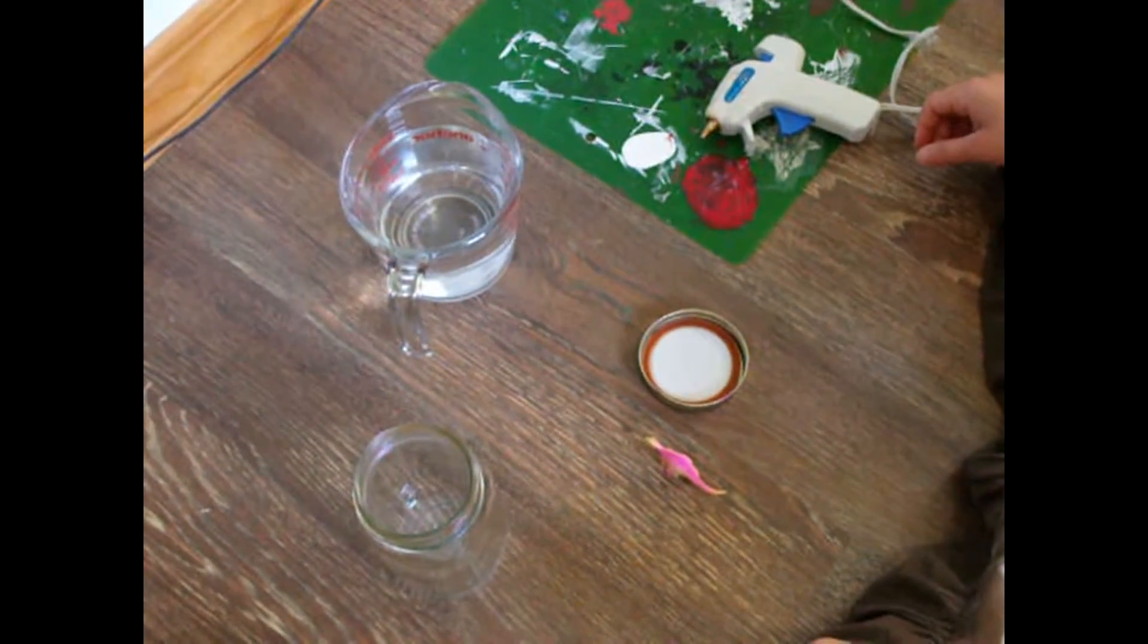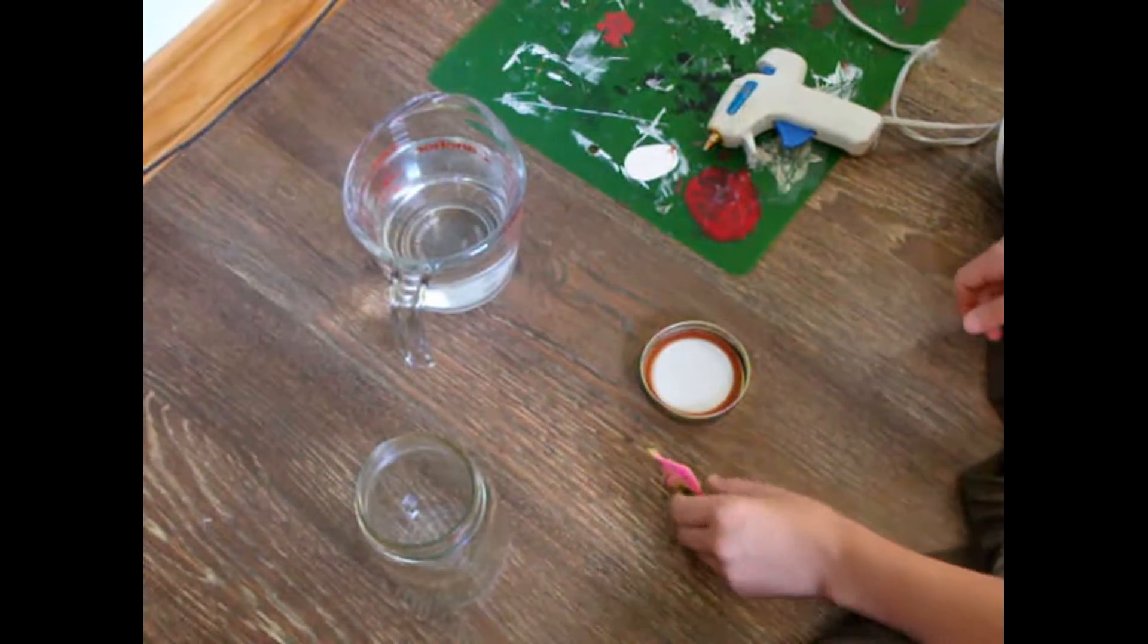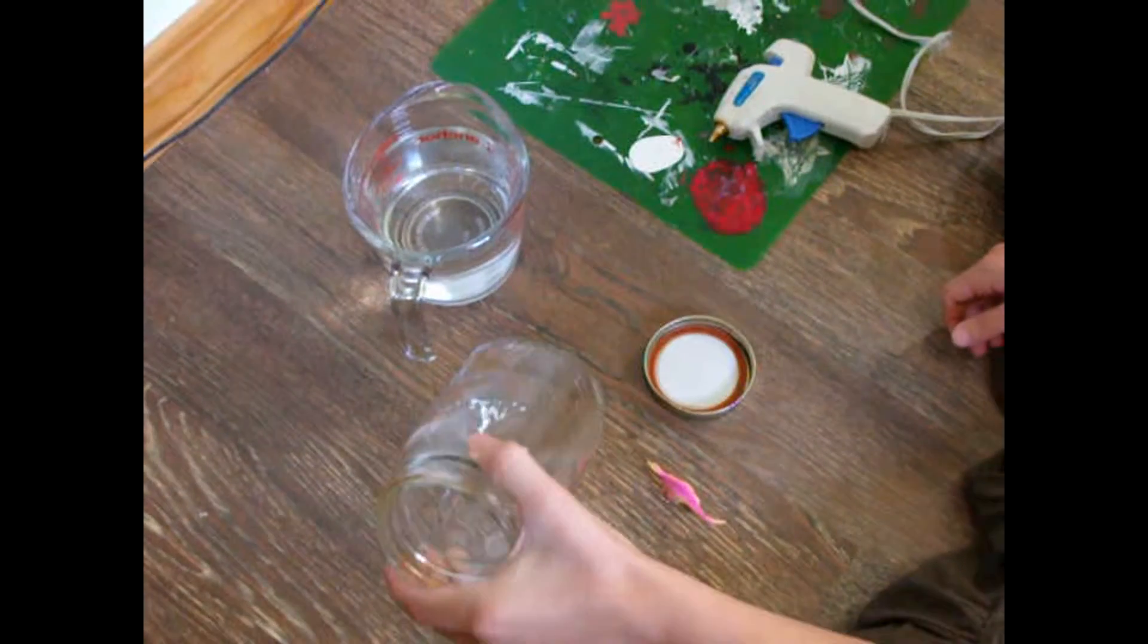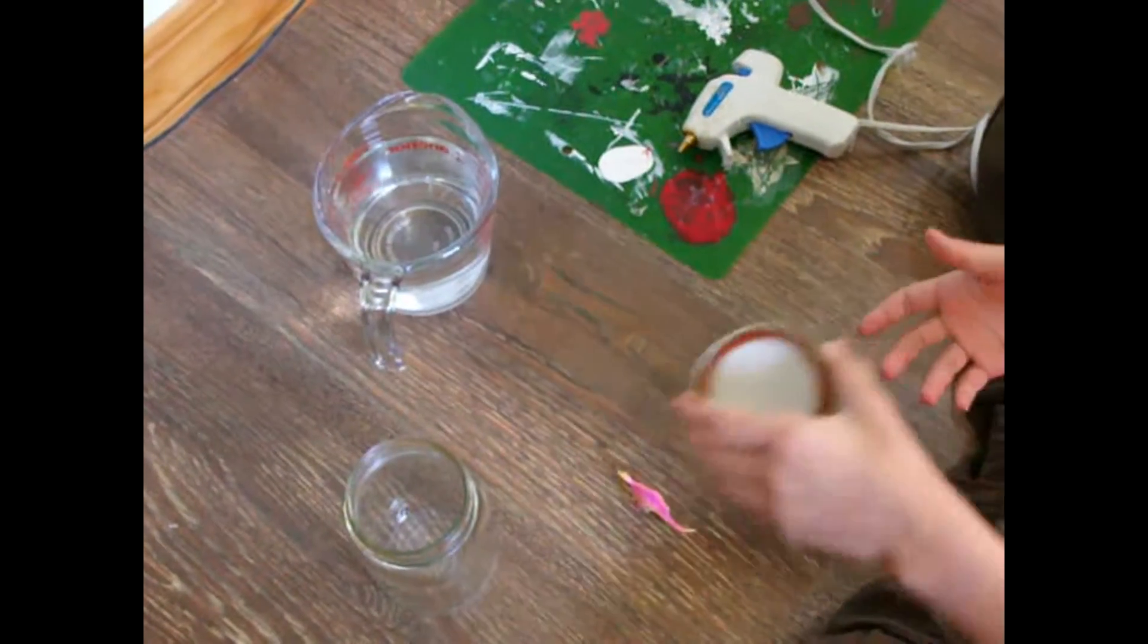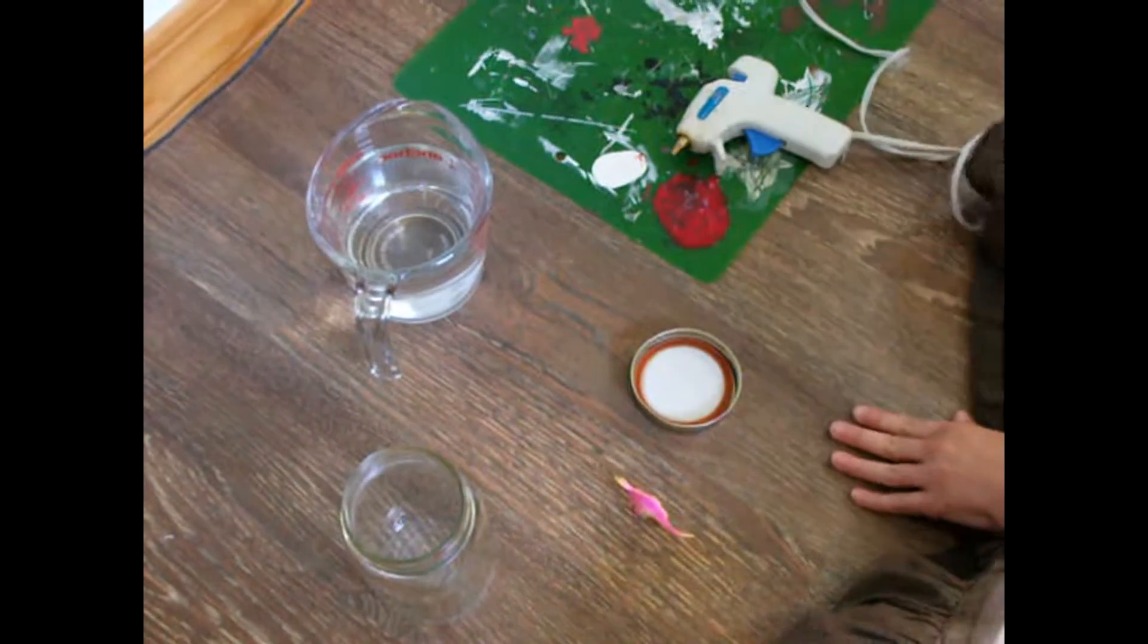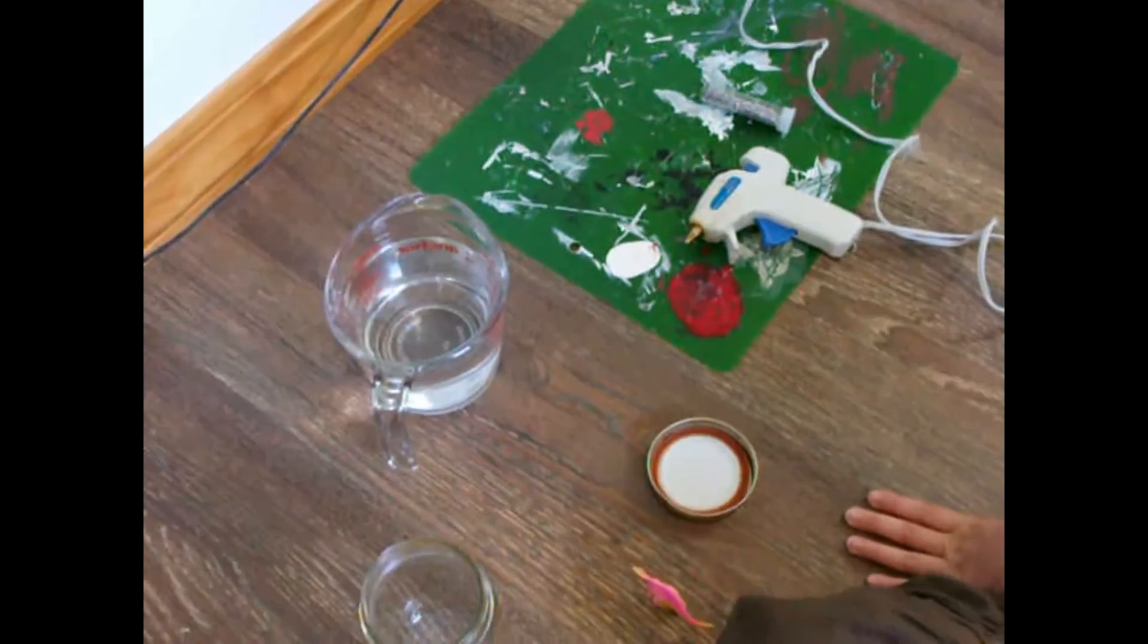Hi, today we're going to be making a snow globe. What we'll need is a little plastic figurine, a jar, a lid that fits it good, some water, some glitter, and a hot glue gun.